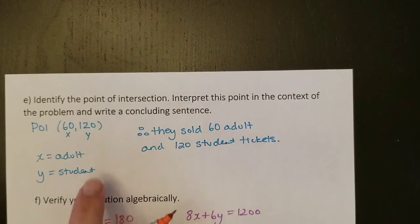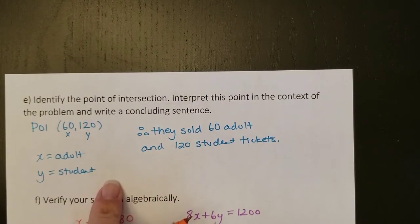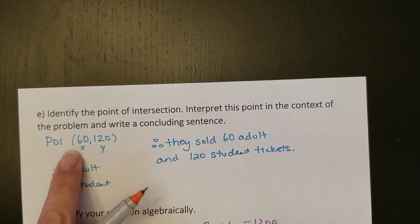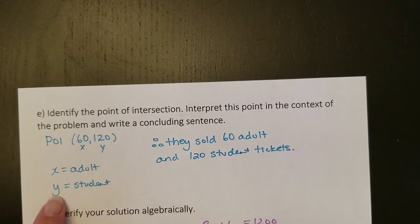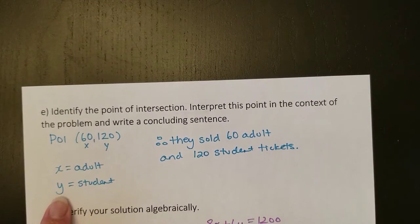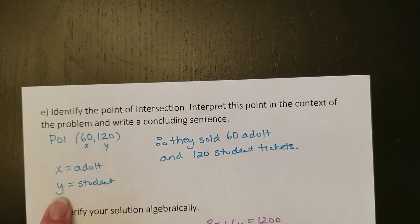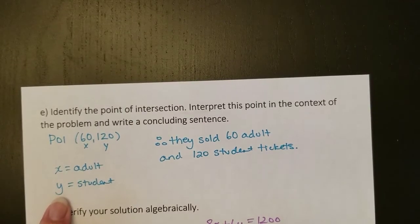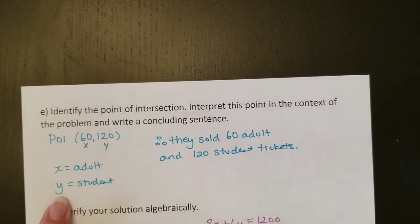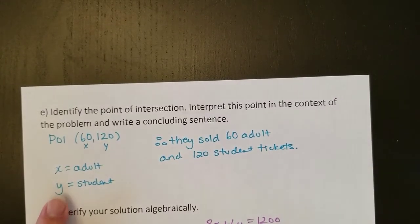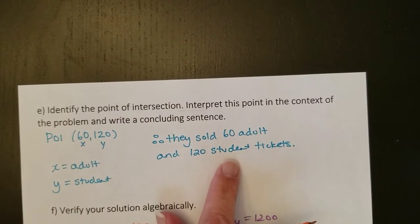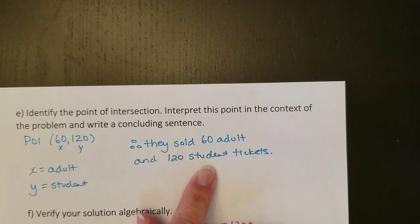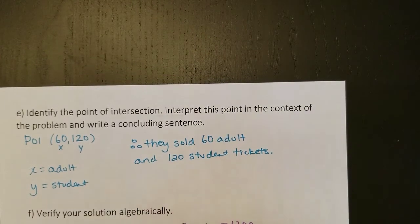Part E asks, what is the POI and what does it mean? So here I've got my POI is 60 and 120, which is an X and a Y value. And remember back from the very beginning, we said that X was the number of adult tickets and Y was the number of student tickets. So these things are both true. There's a total of 180 tickets and they made $1,200 when there is 60 adult tickets and 120 student tickets. So that POI answers the question. So therefore, they sold 60 adult and 120 student tickets.